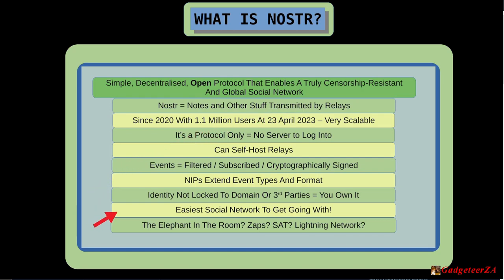NOSTR is actually one of the easiest social networks to get registered and get going on. It's simpler than Twitter, simpler than Reddit. Now for the elephant in the room: yes, it was founded by people into Bitcoin including Jack Dorsey, and on the global feed you will find many users promoting Bitcoin. But you can get going without registering any Bitcoin address and just use it as a plain social network.